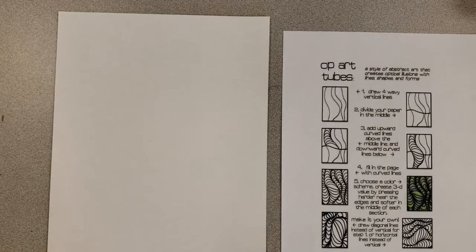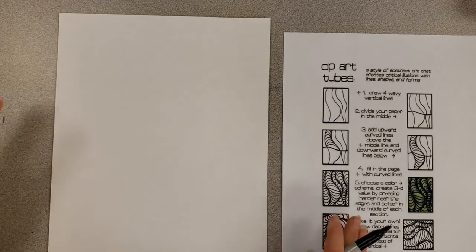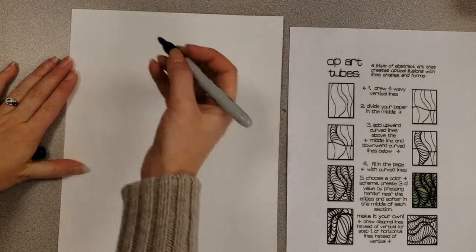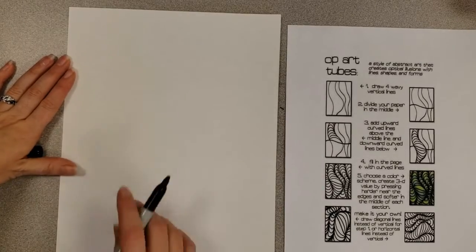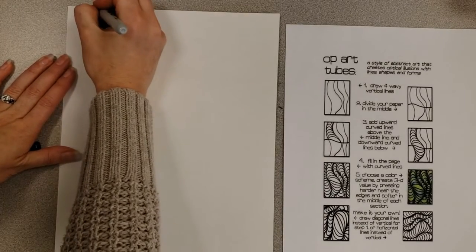It says draw four wavy vertical lines. Vertical means up and down. So I'm going to draw four wavy vertical lines going from the top of my paper.